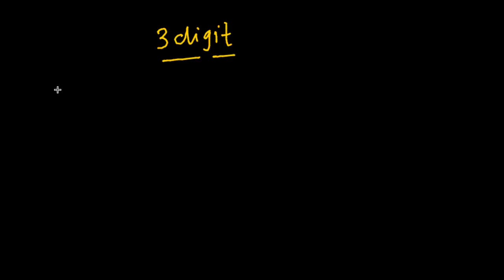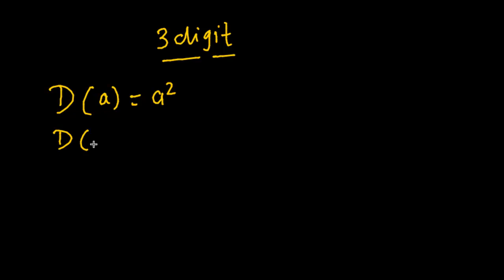If you have seen my previous video, you would know the concept of duplex. The duplex of a single digit number is given by the square of that number — that is d(a) = a². The duplex of a 2-digit number is given by 2ab, where a and b are the digits of the number. For example, if the given number is 13, then a = 1, b = 3, and the duplex is 2ab.